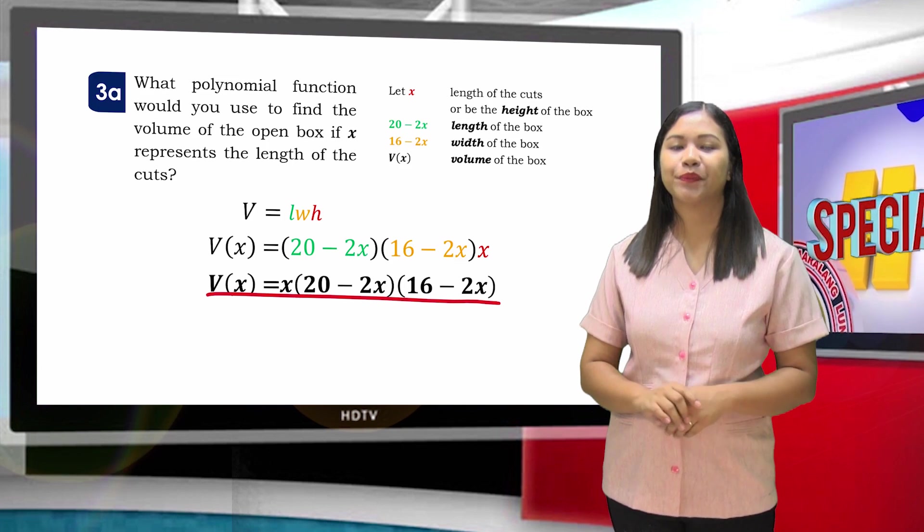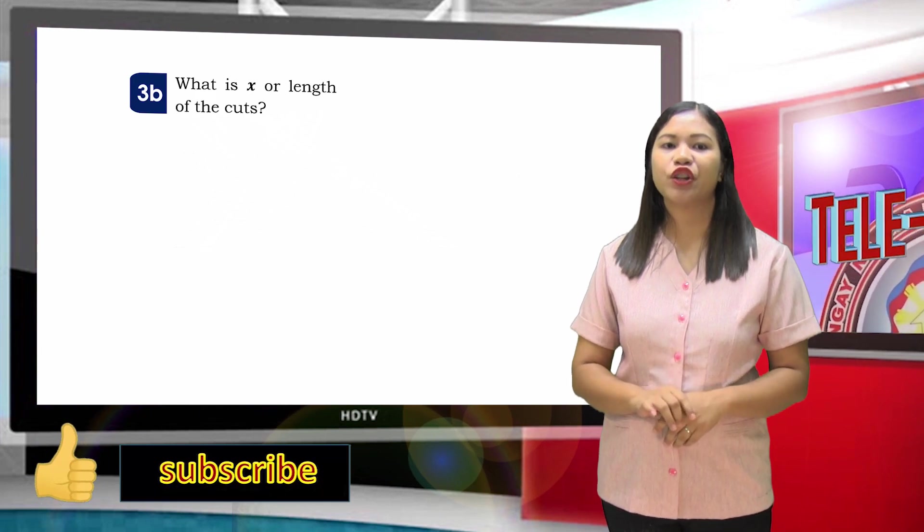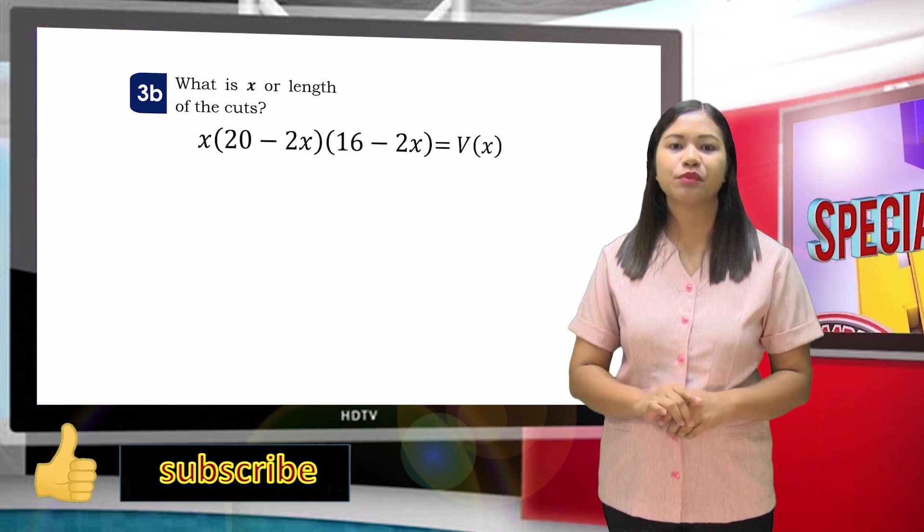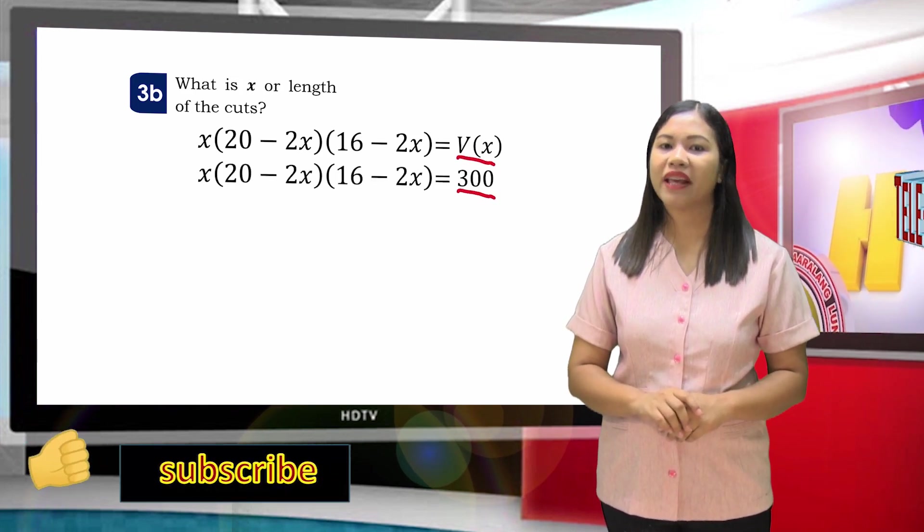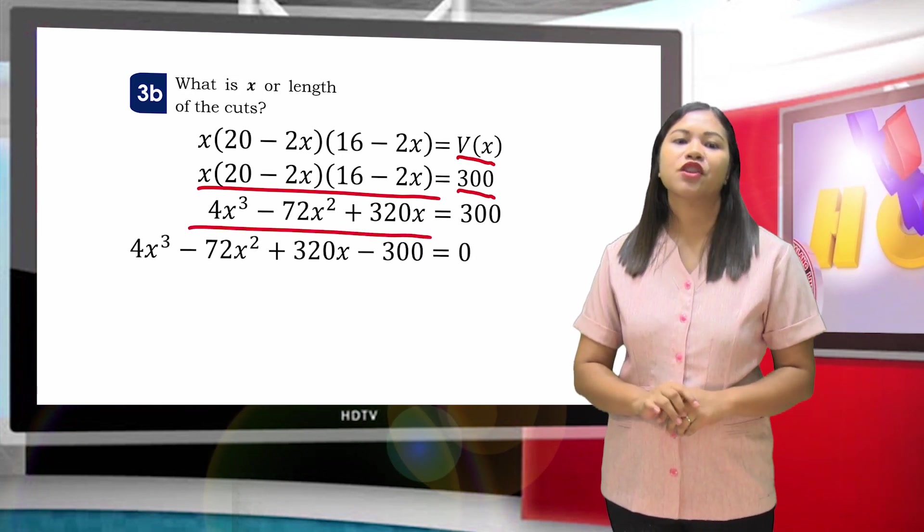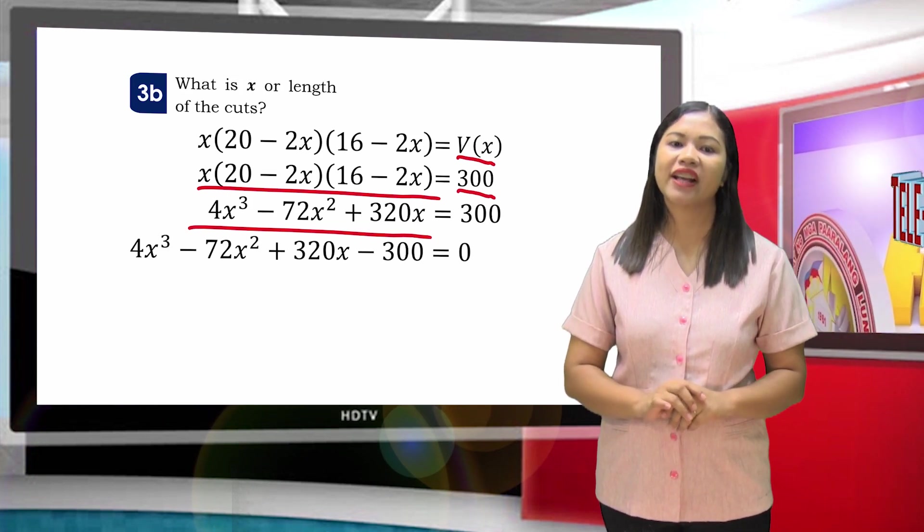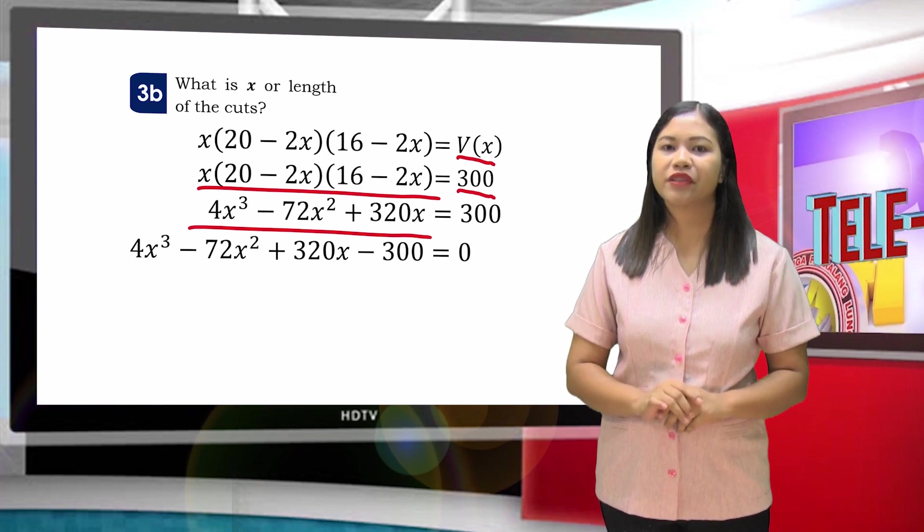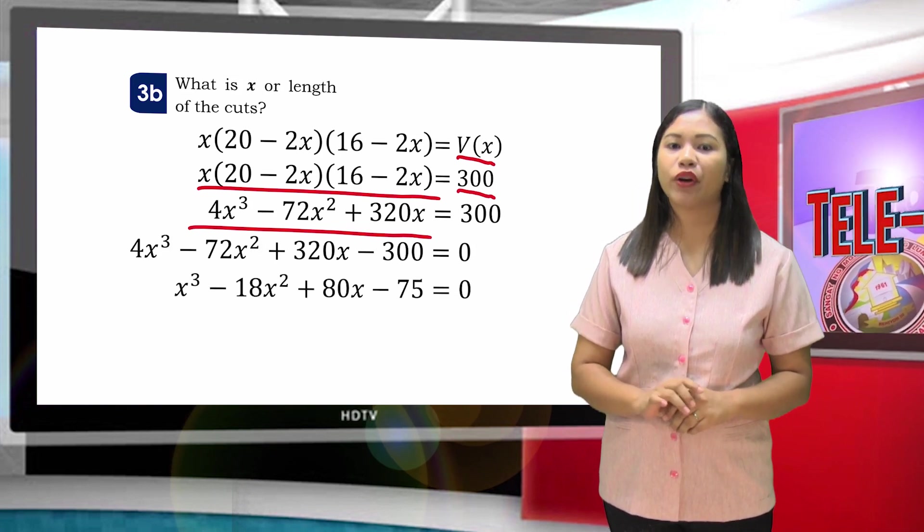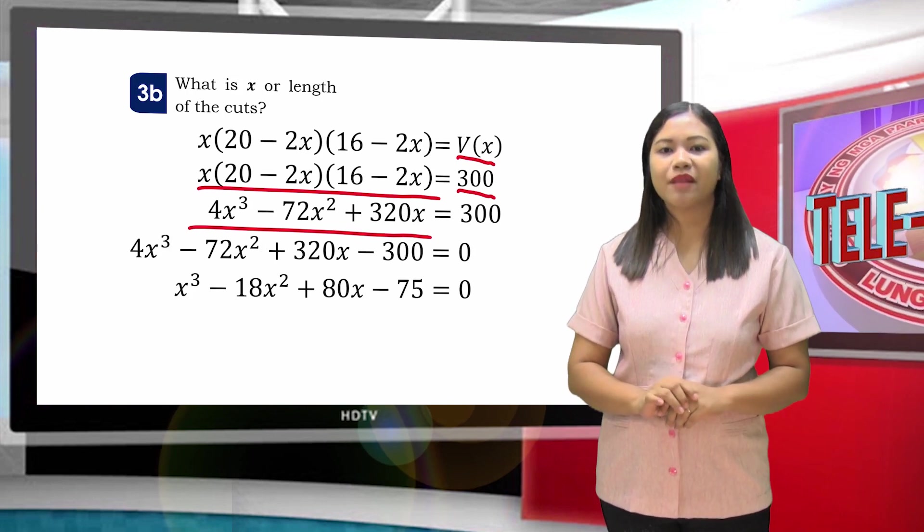Question number 2: What is X or the length of the cuts? We will use the polynomial function of the volume of the box that we got from question 1. Replace V(X) with 300. Next, multiply the factors on the left side of the equation. This will be its product. Subtract 300 on both sides of the equation. This gives us 4X³ - 72X² + 320X - 300 = 0. Divide both sides of the equation by 4. This will be the new equation.